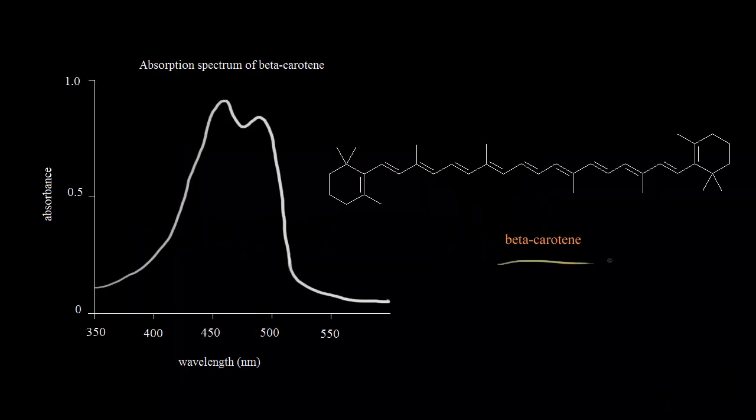On the right, we have the dot structure for beta-carotene, which is an orange molecule that's responsible for the color of carrots. On the left is the absorption spectrum for beta-carotene. The reason why beta-carotene has a color is because it absorbs light in the visible region of the electromagnetic spectrum.